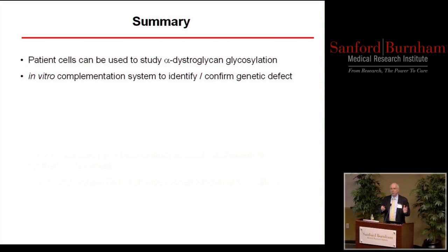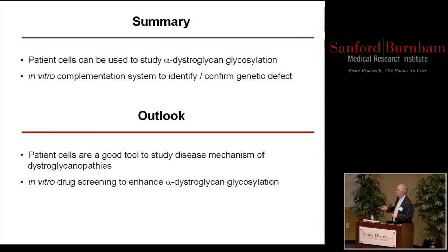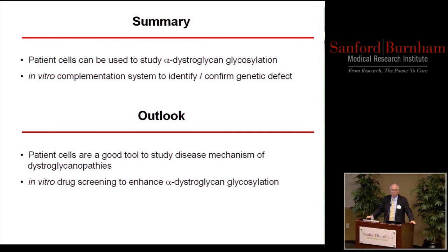Work currently going on in the laboratory uses patient myoblast cells to study dystroglycan glycosylation, look at mutations, and do in vitro screening for drugs that would increase glycosylation. An exciting aspect of this research is that there are no patients who are null — if you're null for these enzymes or dystroglycan, it's lethal both in mouse and humans. All patients tend to have around 10–15%, sometimes 20% activity. We think you should be able to develop compounds that would stimulate that activity and hopefully rescue the phenotype.